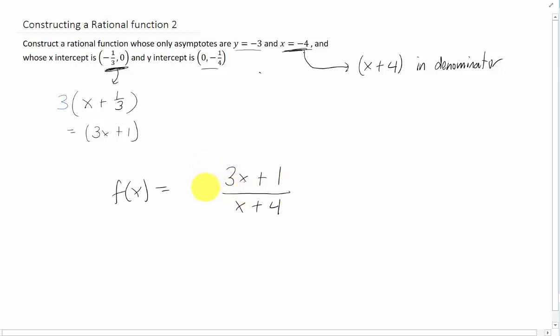So I am just going to put a constant in here. Well this constant does not change the fact that we have a 0 at negative 1 third and it doesn't change the fact that we still have an asymptote of x equals negative 4. What it does allow us to do is potentially change what the y intercept is or what this horizontal asymptote is. Let's look at this y intercept first.